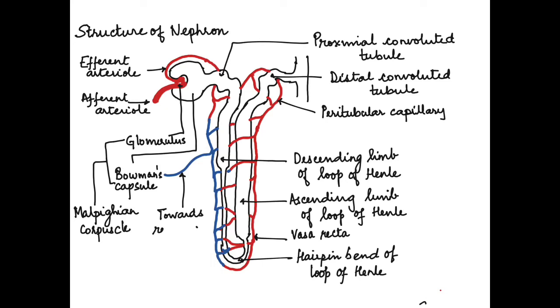The filtrate that is formed in the proximal convoluted tubule moves through the tubule into the loop of Henle where reabsorption happens, and then secretion happens in the distal convoluted tubule. After all this, the filtrate is now called urine, which passes through the collecting ducts.